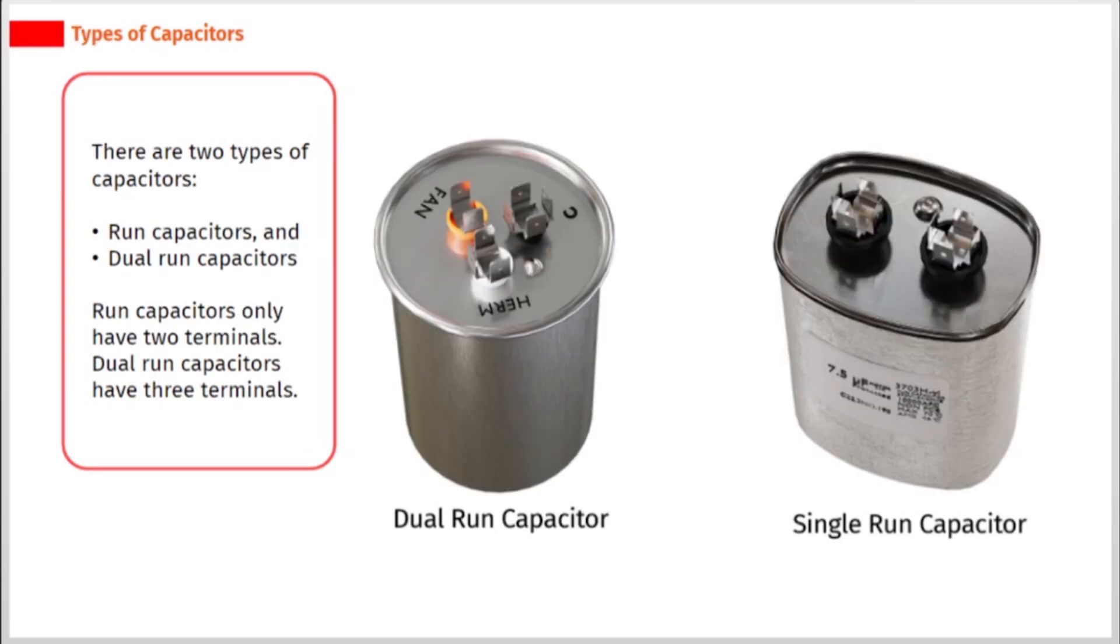There are two types of capacitors: run capacitors and dual run capacitors. Run capacitors only have two terminals. Dual run capacitors have three terminals.